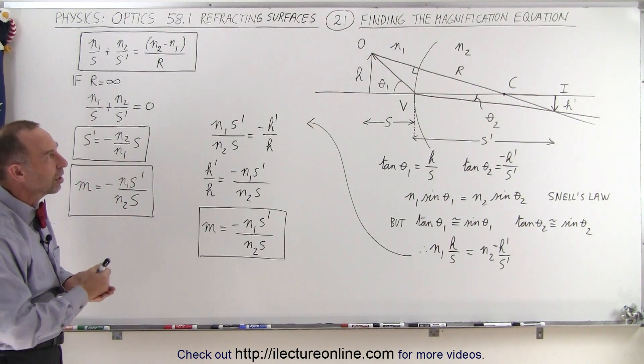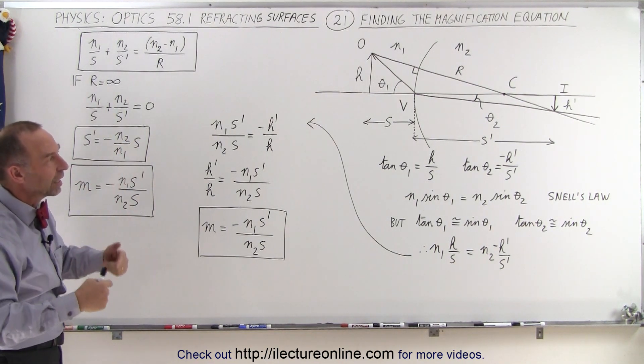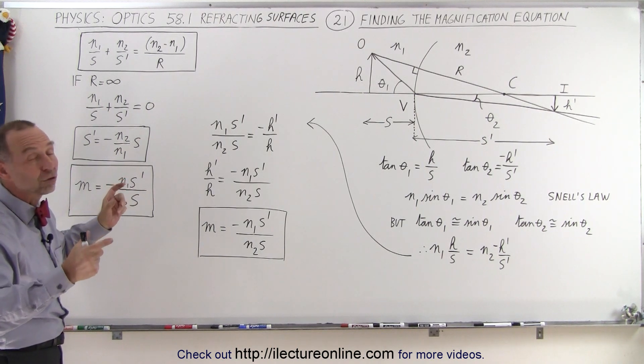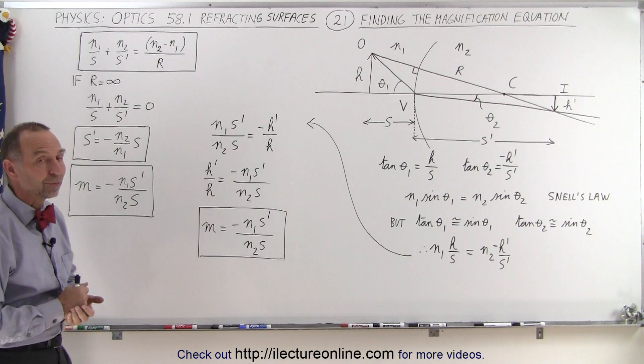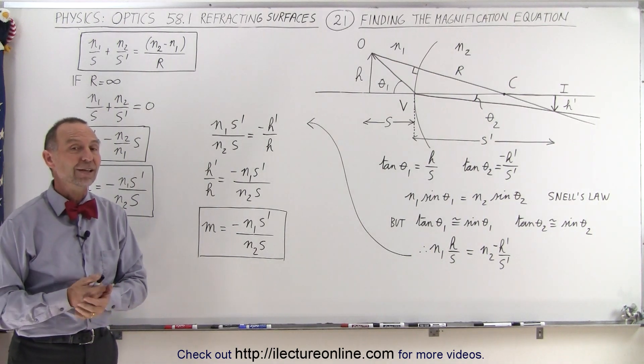So simply using Snell's law, tracing the two rays together, finding the ratio of the height in terms of the tangents of those two angles, and there comes the equation, and that is how it's done.